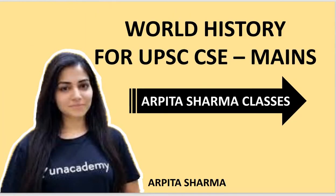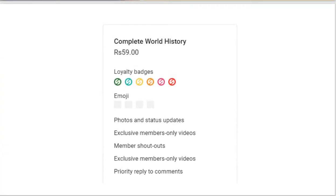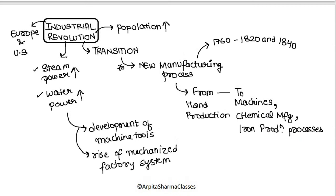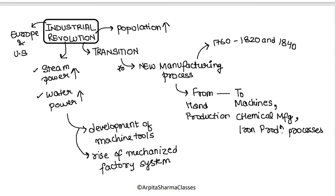This is a demo lecture for world history. If you like this lecture, do join the complete world history course through channel membership. At just rupees 59, you get the entire batch. In lecture 1 of the batch, we covered the industrial revolution. Basically, the Industrial Revolution started in England and it means a transition — a shift to a better mode of manufacturing processes.